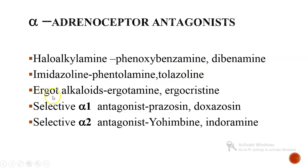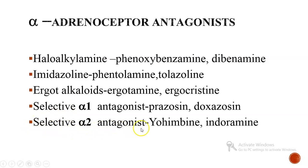The examples for ergot alkaloids are ergotamine and ergochristine. The examples for selective alpha-1 antagonists are prazosin and doxazosin. These drugs act by selectively blocking alpha-1 receptors in the peripheral blood vessels, leading to vasodilation. For selective alpha-2 antagonists, these drugs act by selectively blocking alpha-2 receptors.